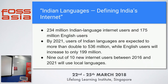Currently there are 234 million English Indian-language users who prefer Indian languages over English, and that number is going to increase. Nine out of ten new internet users between 2016 and 2021 will prefer their own native language over English. If there aren't enough people working on these languages, users will have to switch to English — and that's an inconvenience. That's why I wanted to do this talk.